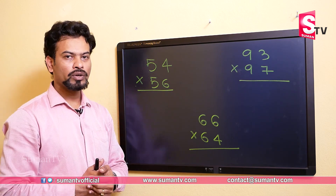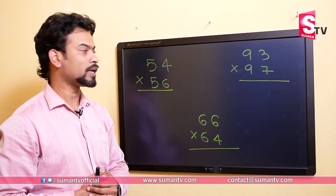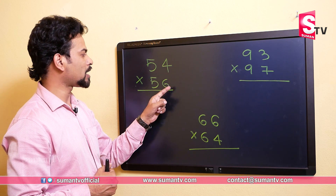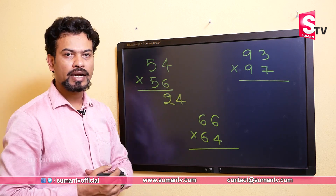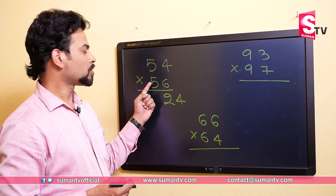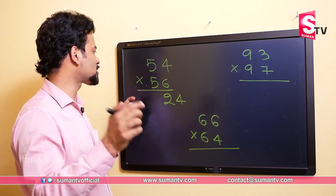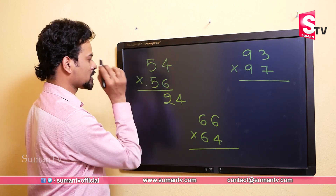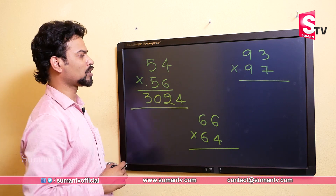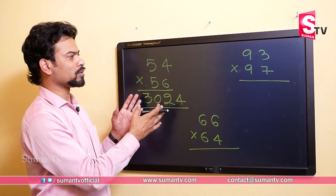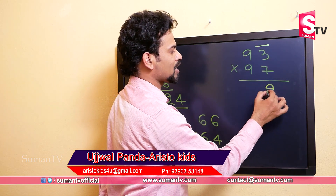First, multiply the unit place with the unit place: 4 multiplied by 6 is 24. Second step, multiply the tens digit by its successor: 5's successor is 6, so 5 multiplied by 6 is 30. So the answer to 54×56 is 3024 — without doing any lengthy multiplication. For 93×97: unit into unit is 3 into 7, which is 21.